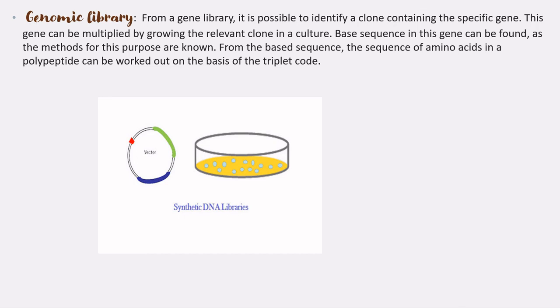Regarding genomic libraries: from a gene library, it is possible to identify a clone containing a specific gene base sequence. From this sequence, the sequence of amino acids in a polypeptide can be worked out on the basis of the triplet code.